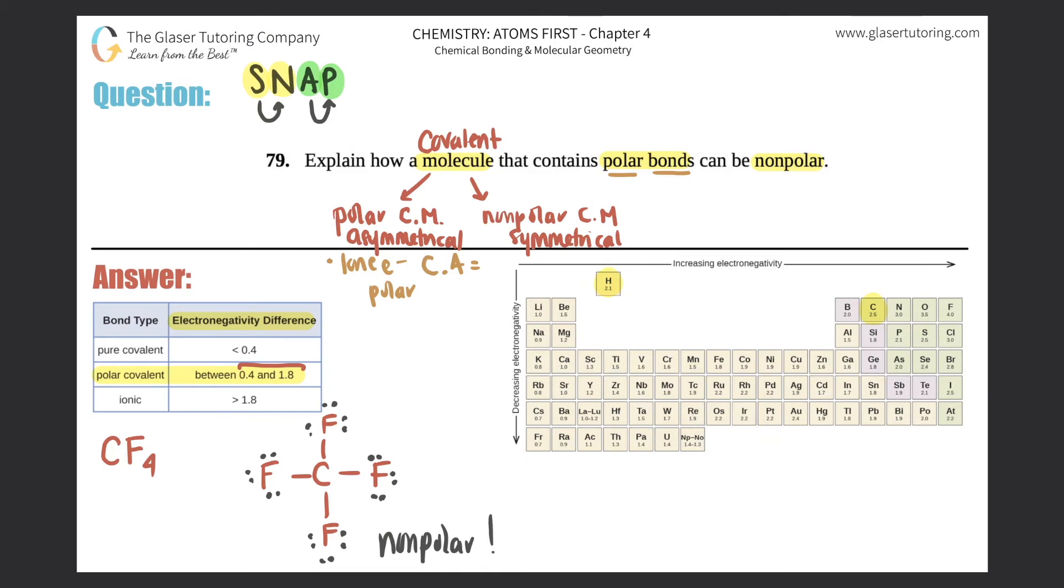Now let's look at the actual individual bonds. It looks like it's a carbon that's bound with a fluorine, and there's four of them. Carbon, like we said before, was 2.5, and fluorine is 4.0. So when we do the subtraction, that's the electronegativity difference. 4.0 minus 2.5 gives us 1.5, and that's clearly between 0.4 and 1.8. So this would be clearly polar.